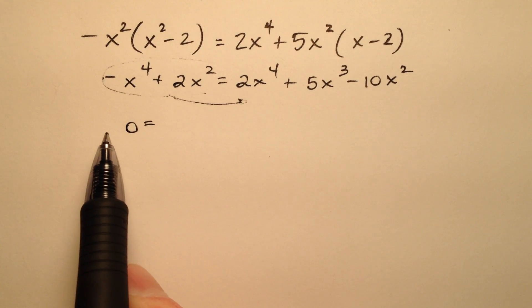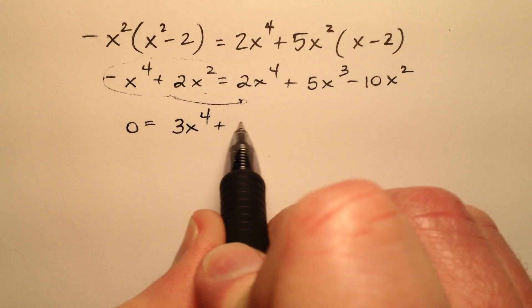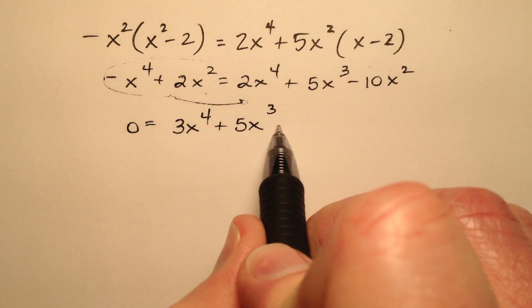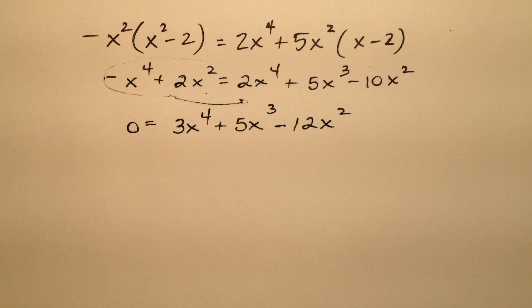I'm going to put a 0 on the left side. So now I have 3x to the fourth plus 5x cubed, and then it looks like it's going to be negative 12x squared.